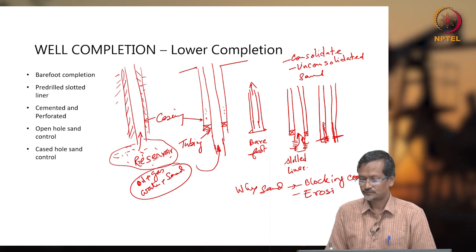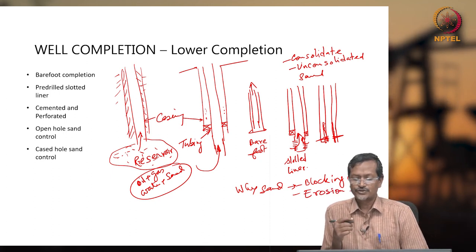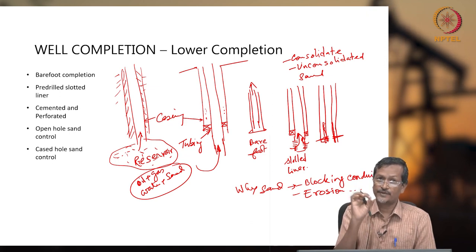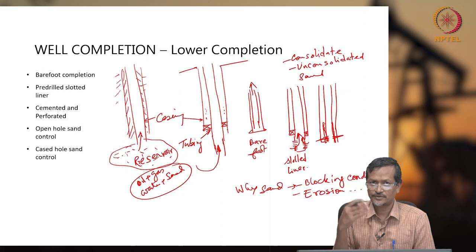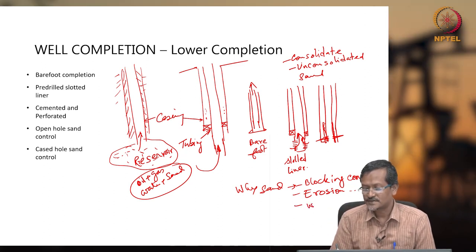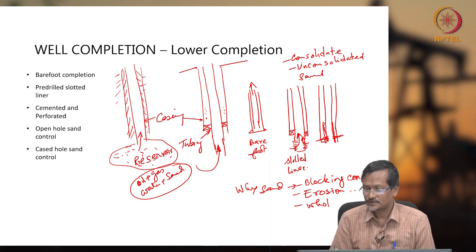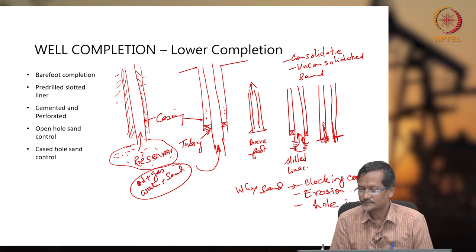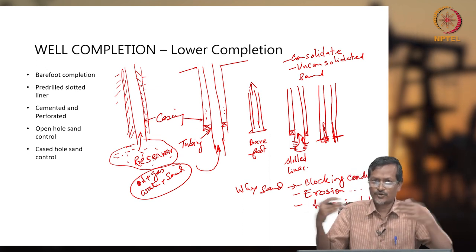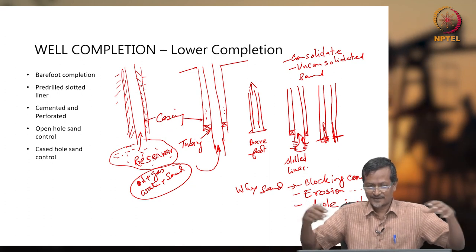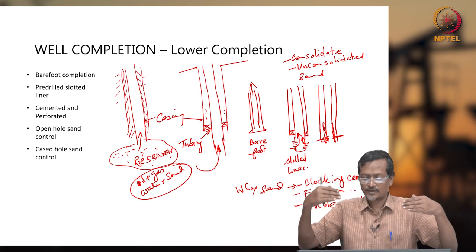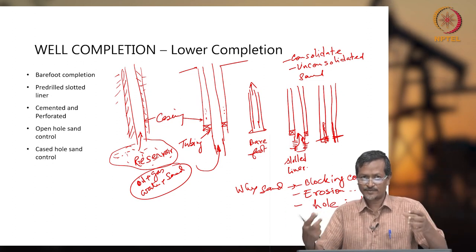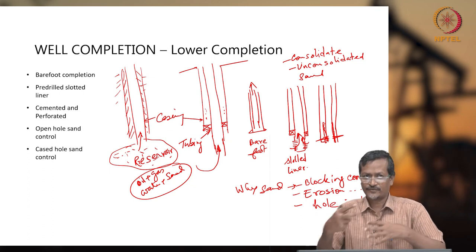Erosion will also occur. At high velocity, if sand is moving through the pipe, the pipe will get continuously hit by sand particles. When sand particles are hitting continuously, pipe erosion occurs, and because of erosion there will be leakage or failure in the future. There may also be hole instability — if you are getting lots of sand, the reservoir sand goes up through the wellbore to the surface, and that reservoir area becomes unstable. Sand particles may fall, causing more sand and productivity changes.